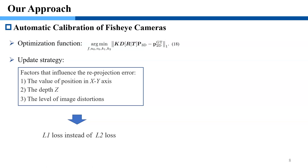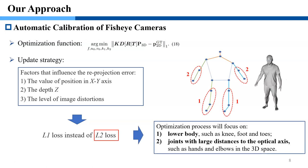According to the analysis of reprojection error, there are three factors that influence the reprojection error. Therefore, we choose L1 loss instead of commonly used L2 loss for estimation of camera parameters. The reason is that L2 loss will make the optimization process focus on lower body and joints with large distances to the optical axis.